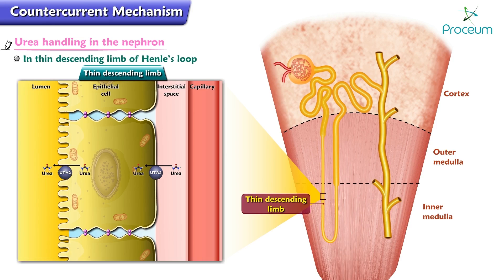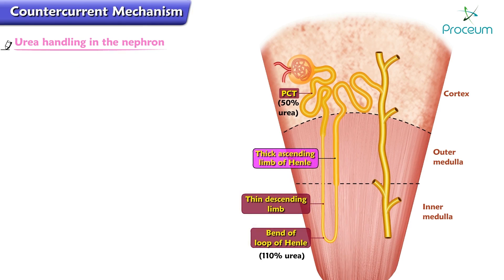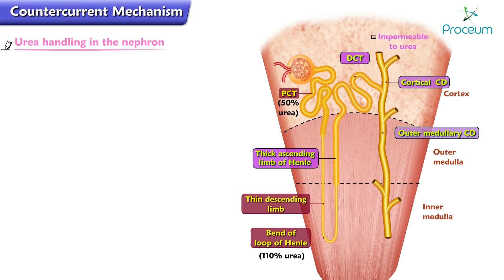More urea is secreted into the thin descending limbs than was reabsorbed in the proximal tubule, so at the bend of the loop of Henle, about 110% of the filtered load of urea is present. The thick ascending limb of the loop of Henle, the distal tubule, and the cortical and outer medullary collecting ducts are impermeable to urea, so no urea transport occurs in these segments. However, in the presence of ADH, water is reabsorbed in the late distal tubule and the cortical and outer medullary collecting ducts.